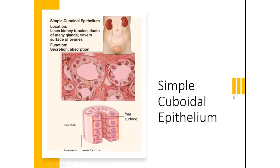Simple cuboidal epithelium consists of a single layer of cube-shaped cells, typically found in the ducts of many glands — structures that carry fluid secretions. You'd find them lining the ducts of sweat glands, the pancreas, and so on. They are good for secretion or absorption and are also found in the kidneys and covering the surface of the ovaries.